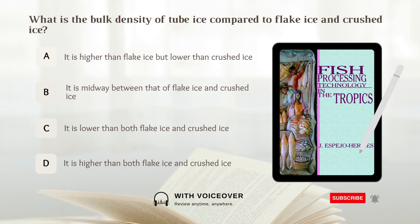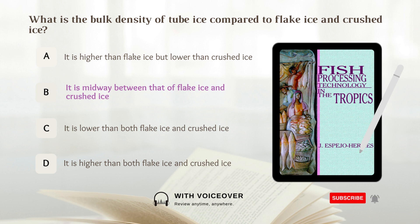What is the bulk density of tube ice compared to flake ice and crushed ice? The answer is B — the bulk density of tube ice is midway between that of flake ice and crushed ice.